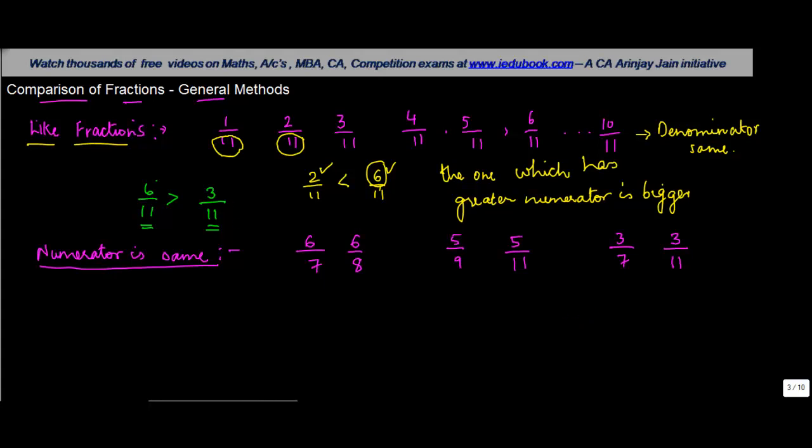Now, when you have a situation where the numerator is the same, then in that case, the fraction which is greater is the one whose denominator is less. So, in this case, the denominator of 6 upon 7 - 7 is less than 8, therefore 6 upon 7 has to be greater than 6 upon 8. And what is the reason for that?